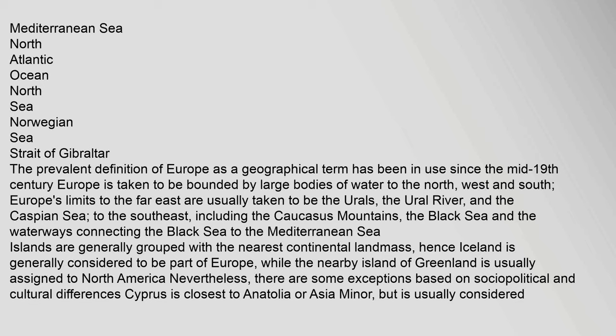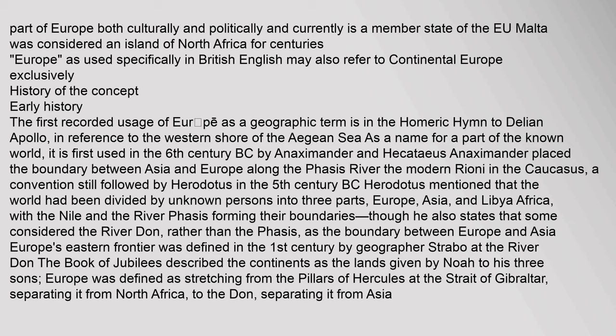The prevalent definition of Europe as a geographical term has been in use since the mid-19th century. Europe is taken to be bounded by large bodies of water to the north, west, and south. Europe's limits to the far east are usually taken to be the Urals, the Ural River, and the Caspian Sea; to the southeast, including the Caucasus Mountains, the Black Sea and waterways connecting it to the Mediterranean Sea. Islands are generally grouped with the nearest continental landmass — hence Iceland is generally considered part of Europe, while nearby Greenland is usually assigned to North America. Nevertheless, there are exceptions based on socio-political and cultural differences: Cyprus is closest to Anatolia but is usually considered part of Europe both culturally and politically, and currently as a member state of the EU.